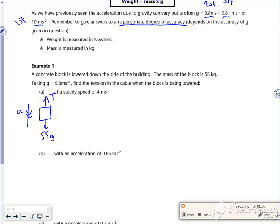Find the tension in the cable when the block is being lowered at a steady speed of 4 m/s. A steady speed implies that a = 0. Using F = ma, the force in the direction of travel minus the force opposing it equals zero. So 55g - T = 0. G is 9.8, so the tension is 55 × 9.8.